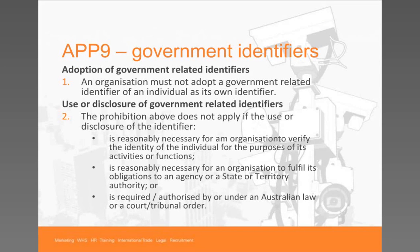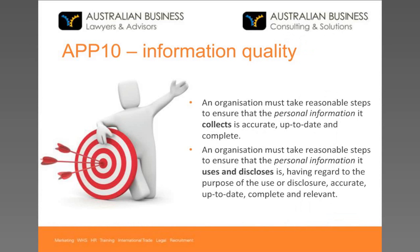APP9 simply means that you can't adopt a government identifier — such as Medicare numbers — to identify individuals within your own system, though there are some exemptions. APPs 10 through 12 deal with the quality and the ability to access and correct personal information. These require you to take steps to ensure your systems are up to date — you may need a process to ask people to update information, seek clarification, or take steps if you know the information is out of date.